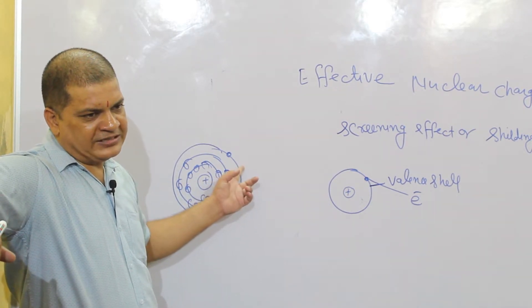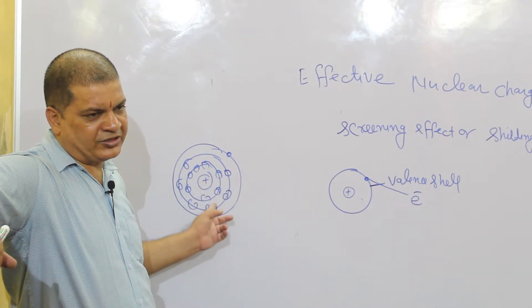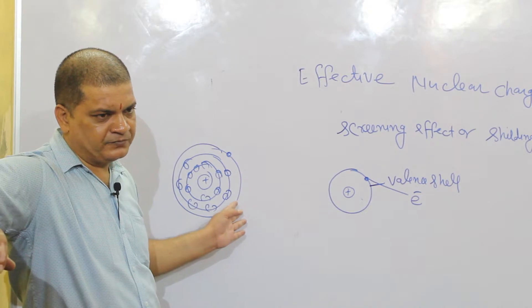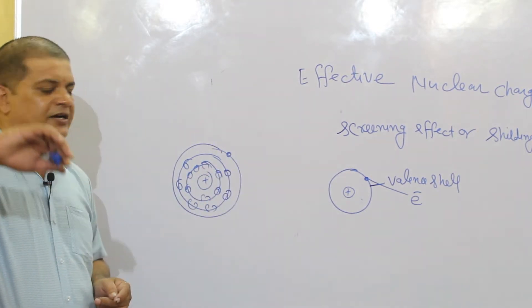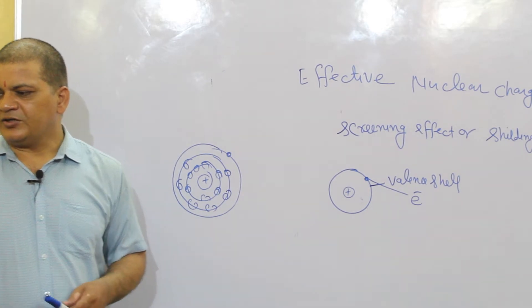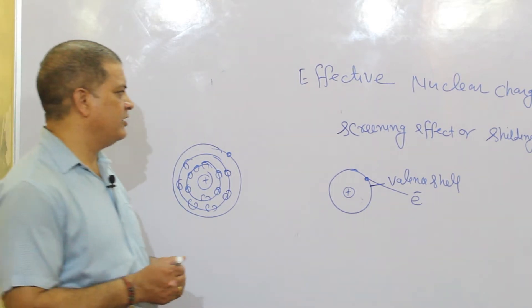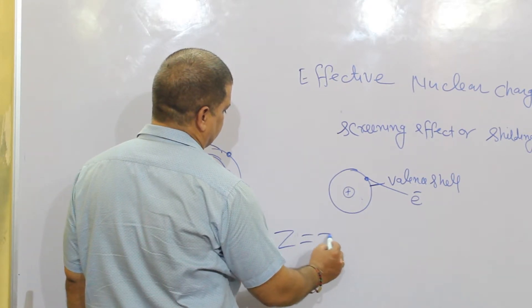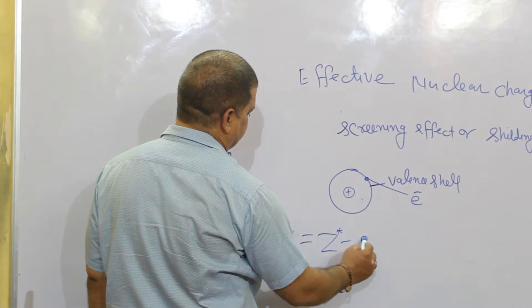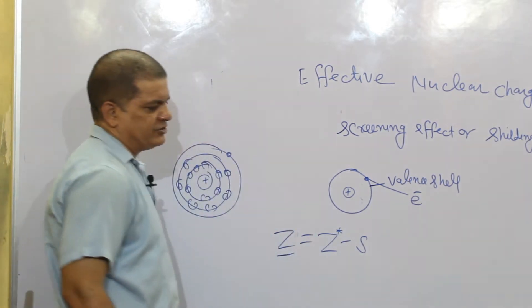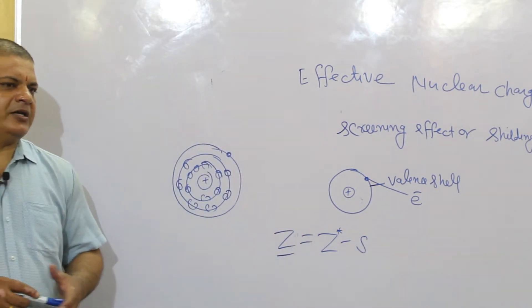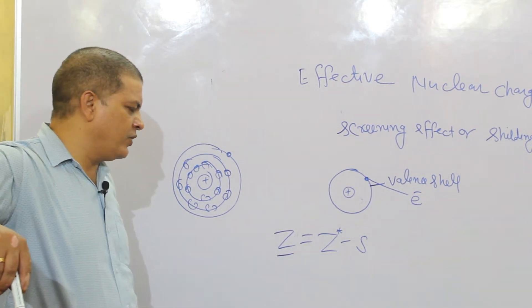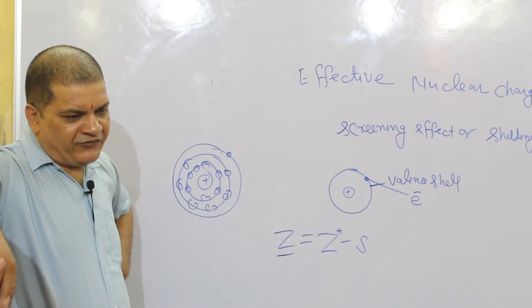From the valence electrons and from the inner shells, they screen the nucleus. After that, the effective nuclear charge will be determined. The formula is Z effective equals Z minus sigma. This is the nuclear charge.